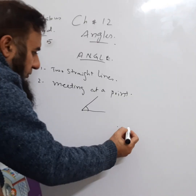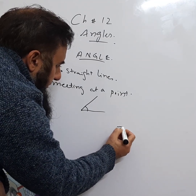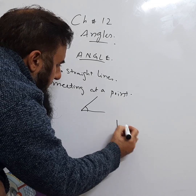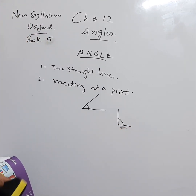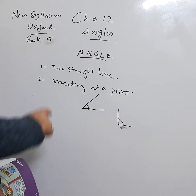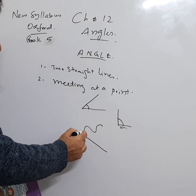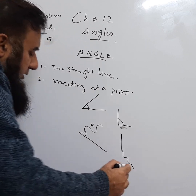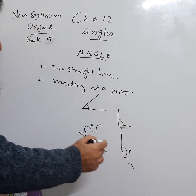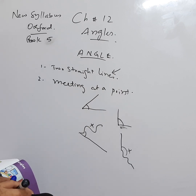Again, if this is a point and one line is straight like this and one is like this, they are meeting on this point — this is called an angle. What is the definition of angle? If a line is curved, this is not an angle because it is not a straight line. The necessary condition is that there must be two straight lines.